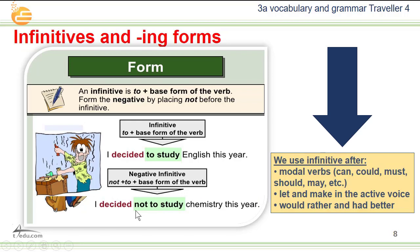Now we will move to another interesting subject: infinitives and the -ing form. We will study this as a revision. An infinitive is 'to' plus the base form of the verb. Form the negative by placing 'not' before the infinitive. We use the infinitive after modal verbs: can, could, must, should, may, etc., and also after 'let,' 'make' in the active voice, 'would rather,' and 'had better.'